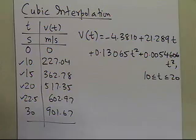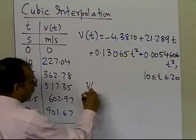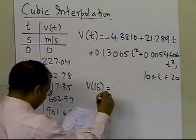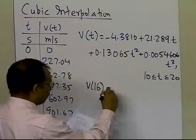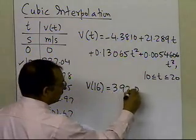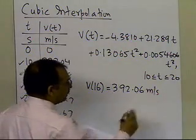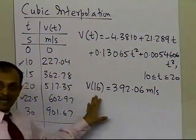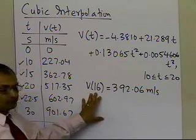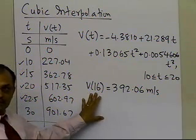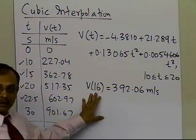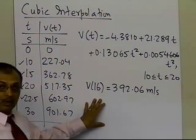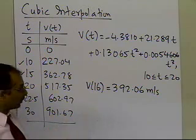We already found the velocity at 16, which turns out to be 392.06. Many times in interpolation, you won't just be asked to find the value of the velocity or function at a particular time or x value, but also you might have to do other operations on it.